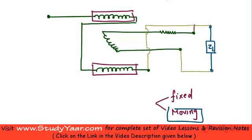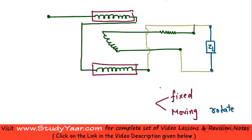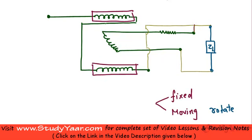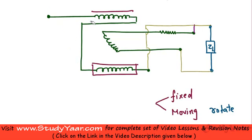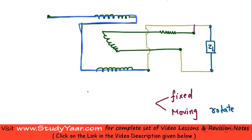There is also a moving coil which can rotate on a fixed axis. This is my fixed coil, this is my fixed coil, and this is my moving coil. The moving coil is kept approximately midway in the region between the fixed coils. The fixed coils, as you can see, are connected in series with each other.